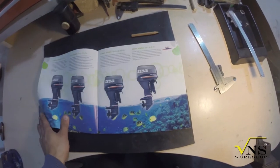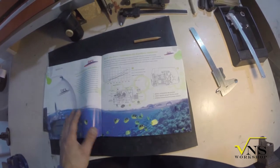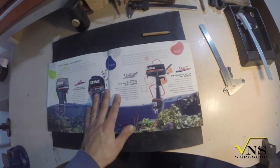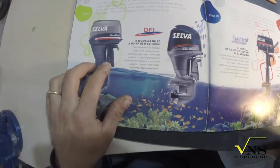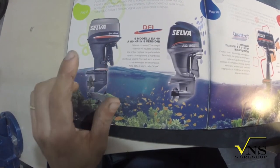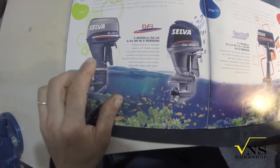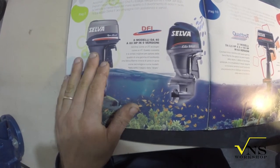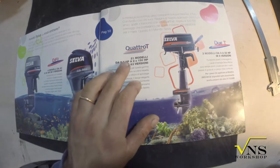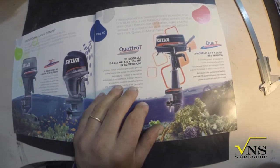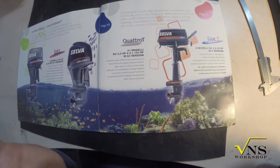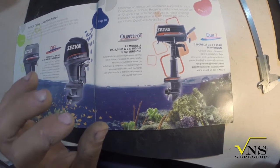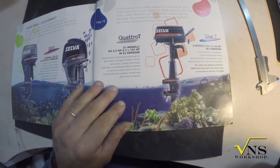Two-stroke engines are simple and powerful, but now comes another problem: the problem of emissions. This company produces eight different models up to 80 horsepower. Everyone is two-stroke, and 21 models are four-stroke. This is because of very restrictive regulations about emissions.